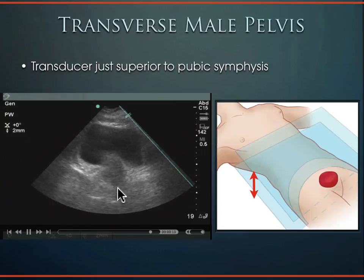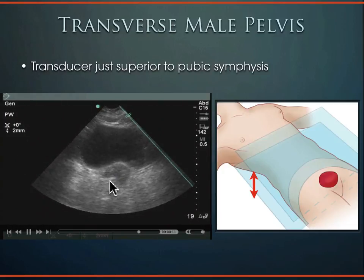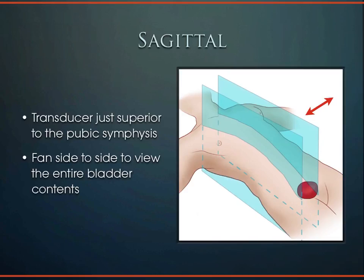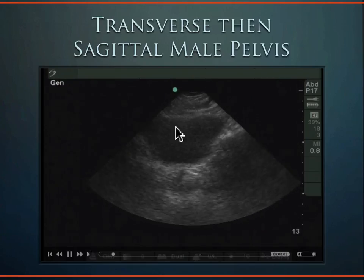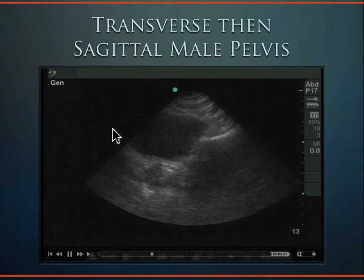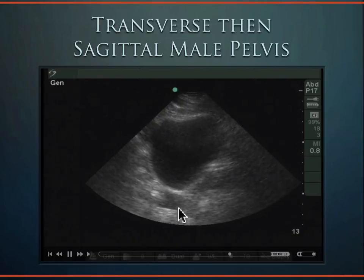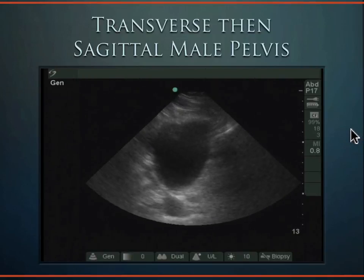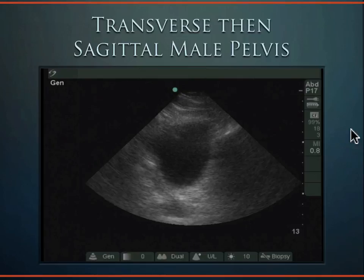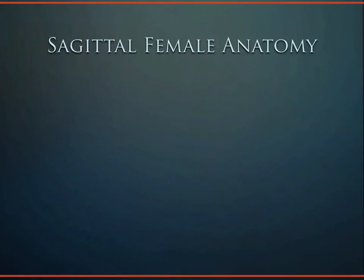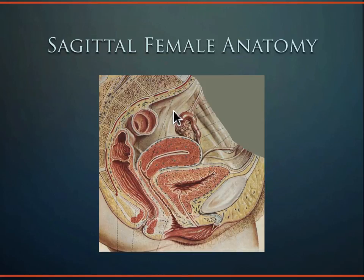In the male pelvis, the prostate takes the location that the uterus occupies in the female. In the sagittal plane with indicator towards the patient's head, the probe sits just superior to the pubic symphysis, fanning side to side through the bladder. Female pelvic anatomy is more complex: the pelvis is tilted back 45 degrees in an upright female, and there's a roughly 90-degree angle between the anteverted uterus and the vaginal vault.